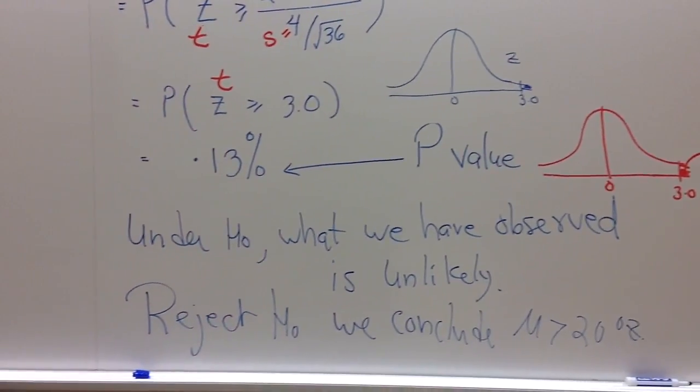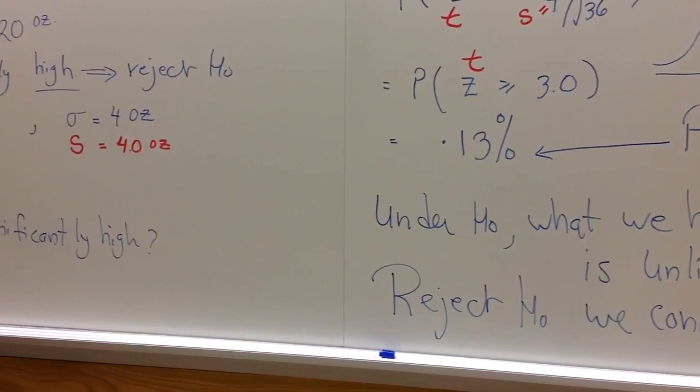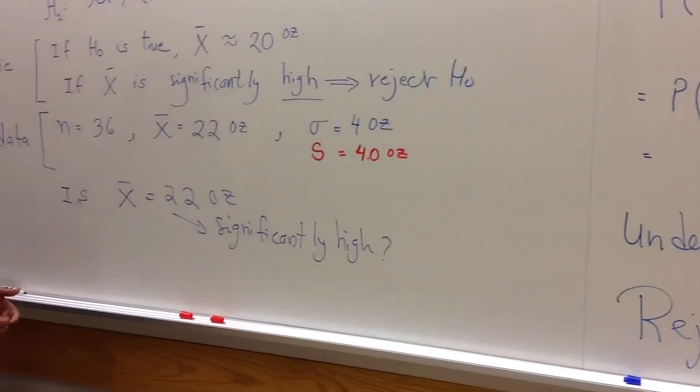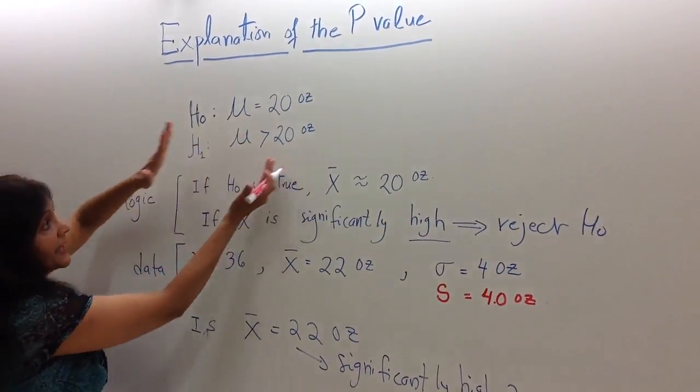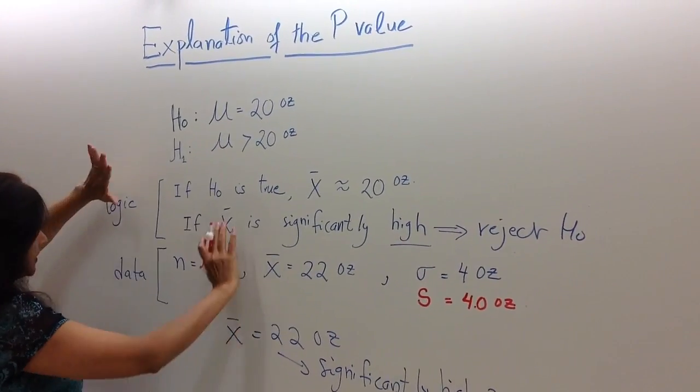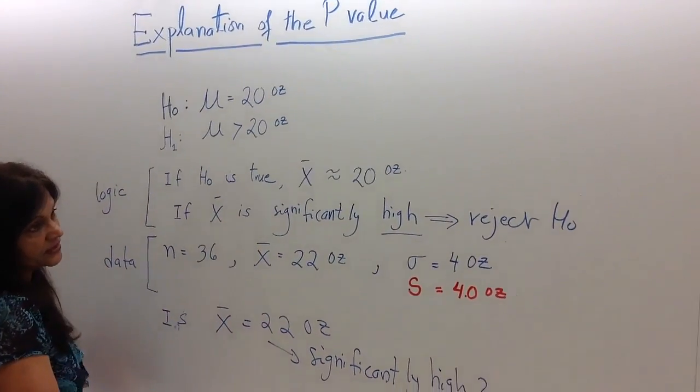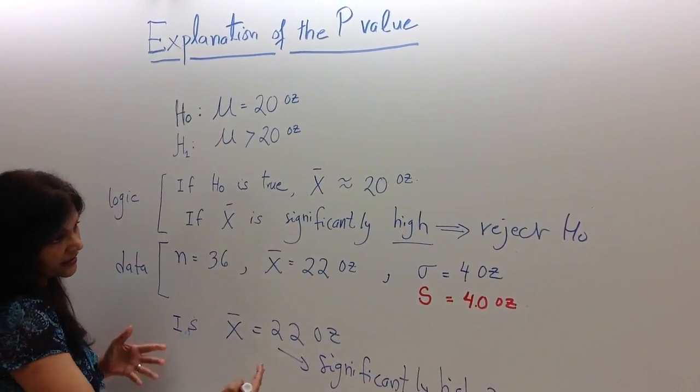Now, in my next video, I will show you another example in which we will calculate the p-value if the alternative is that mu is less than a given value. So the logic would stay the same.